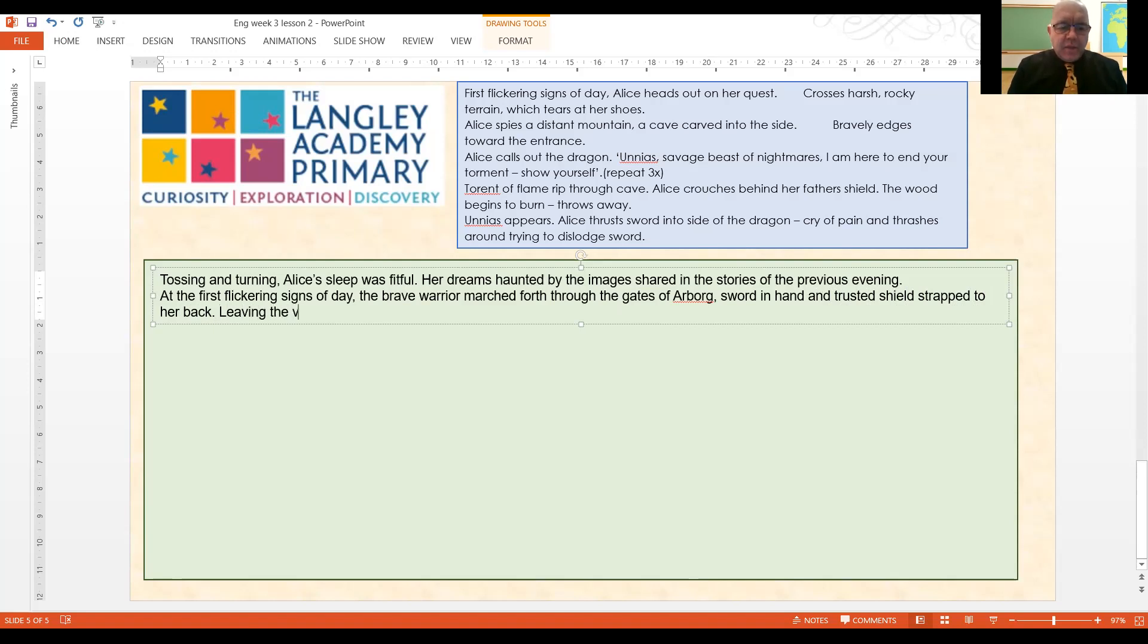Remember from our earlier section, we talked about Arbog being hidden in a valley. So she's now leaving this valley. The terrain became rocky. Now, if I look back to my box of ideas, I actually talked about the terrain being rocky. Maybe terrain is a better word than ground. So the terrain became rocky and difficult to navigate.